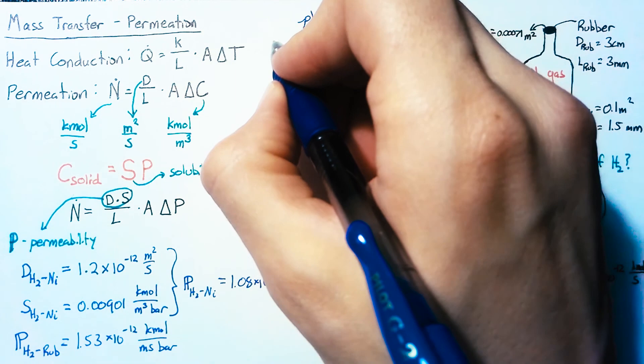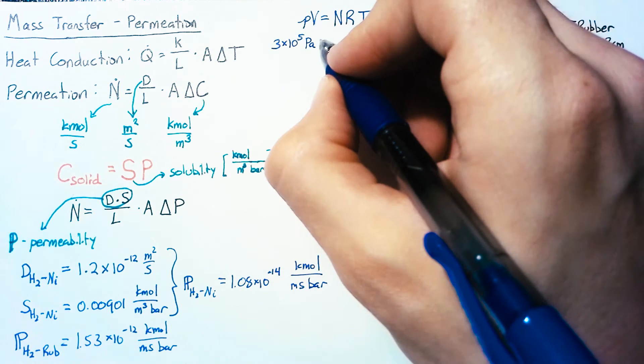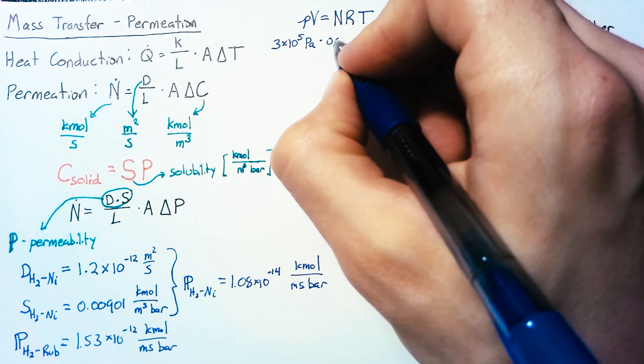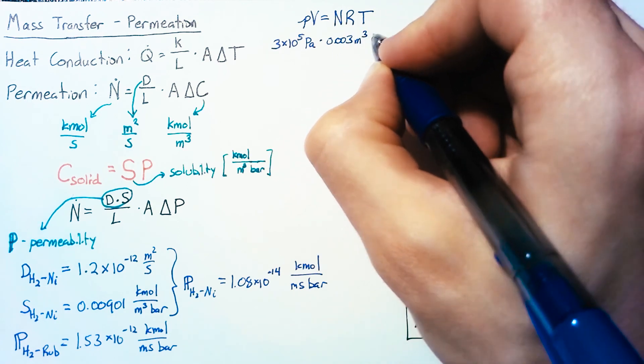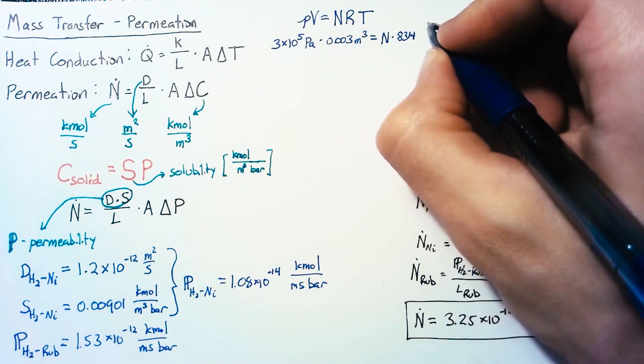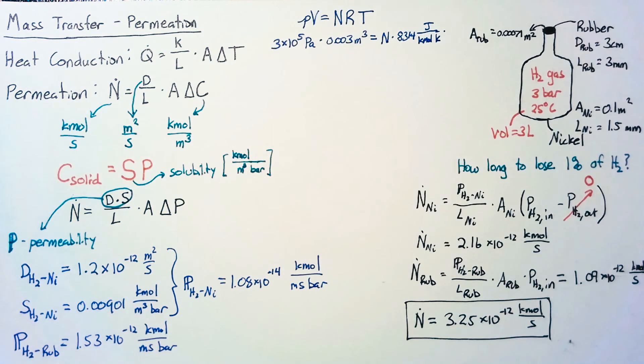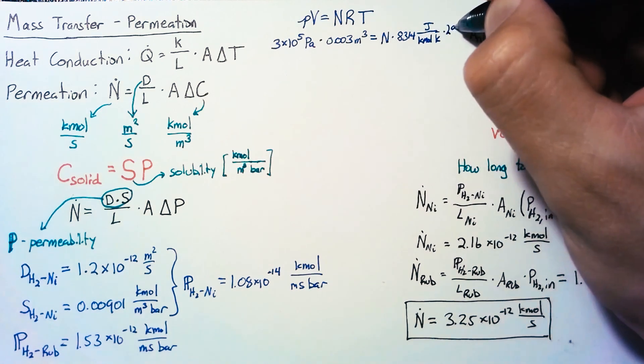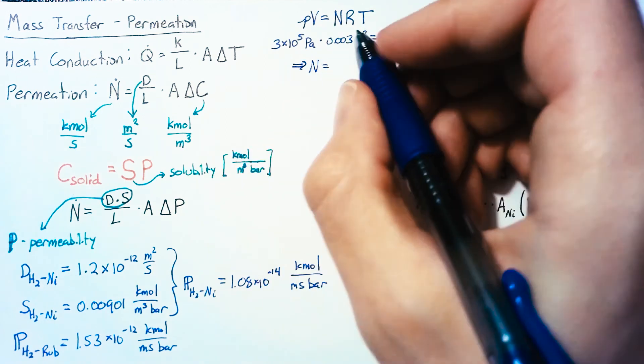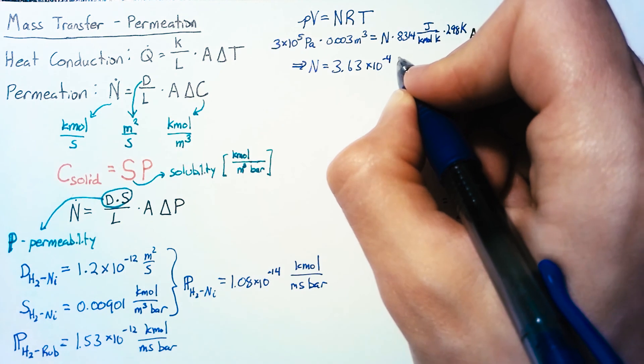Our pressure is 3 bar or 3 × 10⁵ pascals, multiplied by the volume of 3 liters or 0.003 meters cubed. This equals our unknown number of moles times 8,314 joules per kilomole Kelvin, times our temperature of 298 Kelvin. Solving for the number of moles gives us 3.63 × 10⁻⁴ kilomoles.